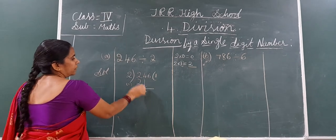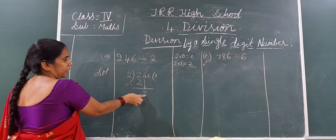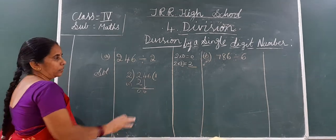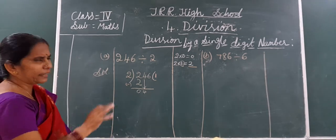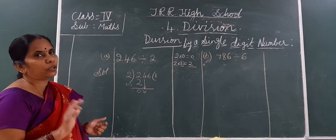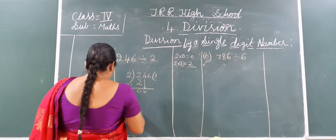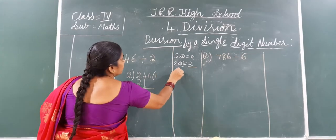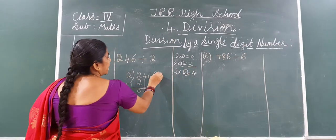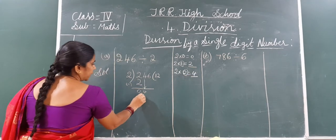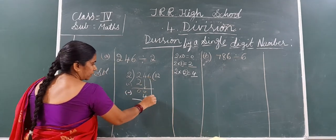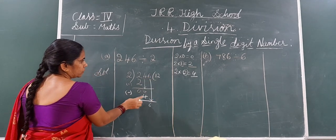Put arrow mark first and take this 4 down here. Now subtract. 2 minus 2 is 0. Now again see, is 4 in the 2 table? Write the 2 table again — only till as far as you need. 2 ones are 2, 2 twos are 4. Now 2 twos are 4 — you got the same number. So circle this 2, write here, underline 4, write here, and again do subtraction. Put arrow mark and take this 6 down here. 4 minus 4 is 0.